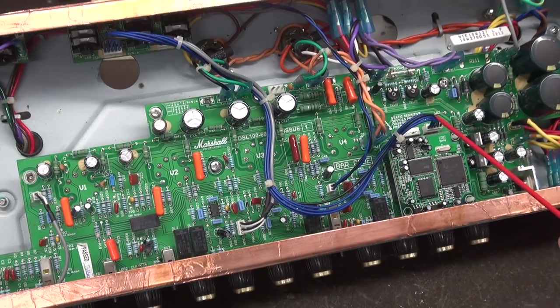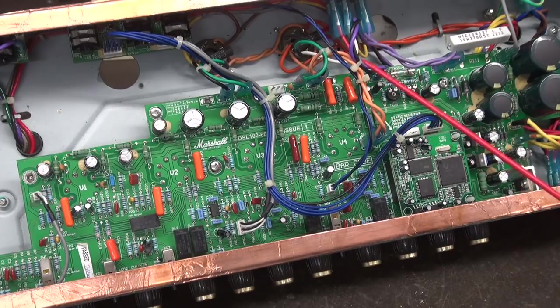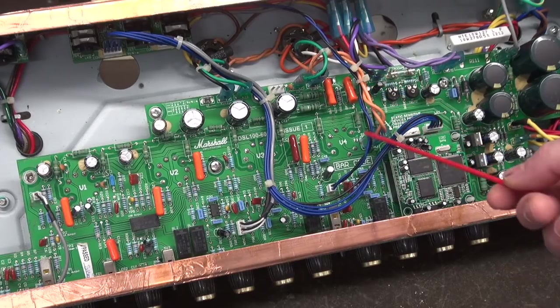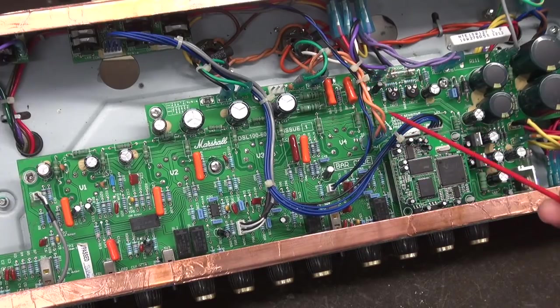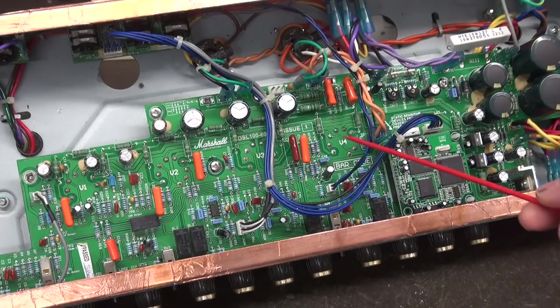Now if this were a hardwired amp, say like a Fender, and it came to the shop with noise and low gain, I would immediately check the tubes because I don't have a circuit board to contend with. In this case, since circuit boards have a track record of bad connections, this is one I'm going to check first.